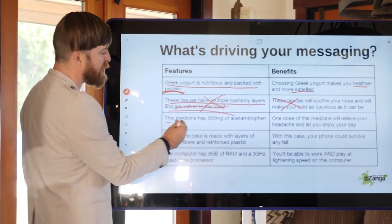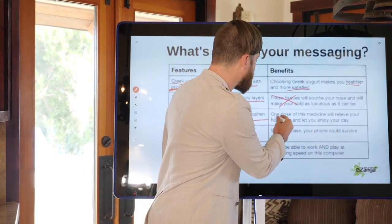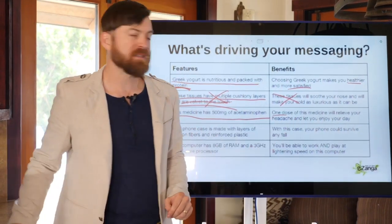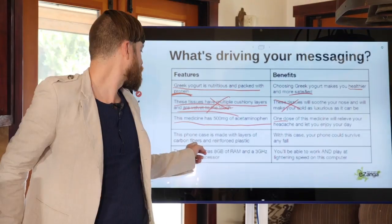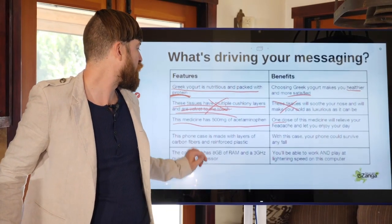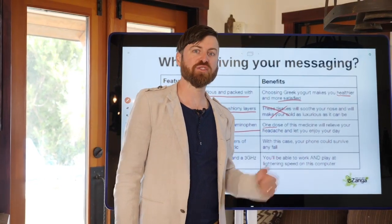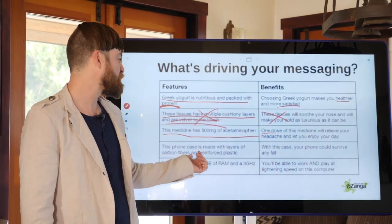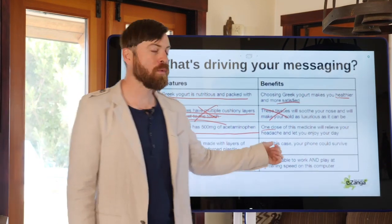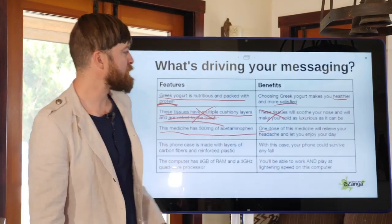Here's a good example: 'This medicine has 500 milligrams of acetaminophen' — that's a feature. The benefit-oriented version is: 'One dose of this medicine will relieve your headache for an entire day.' Another example: 'This phone case is made of carbon fiber and plastic' — feature. The benefit is: 'This phone case will never break' or 'This phone case can survive any fall.' Would you rather buy a phone case with plastic and carbon fiber, or one that can survive any fall? Benefits sell.